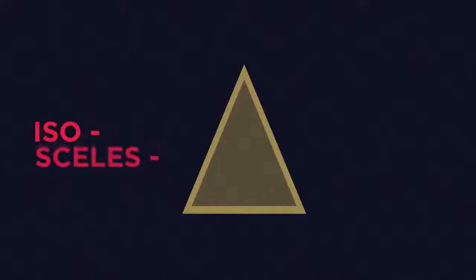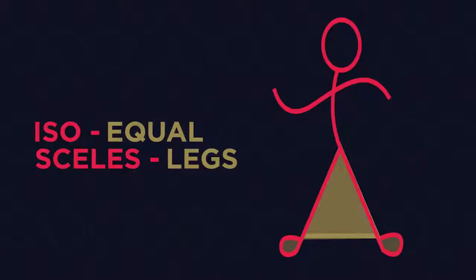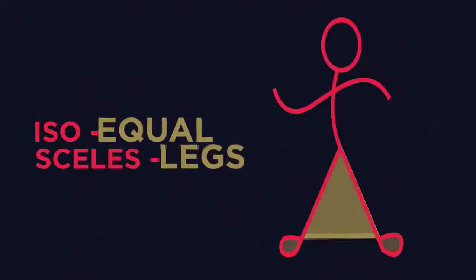Isometric paper is made up of lots of equal triangles. An isosceles triangle is one that has equal legs. Two legs of the same length and then the base.